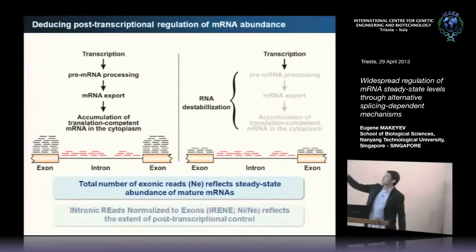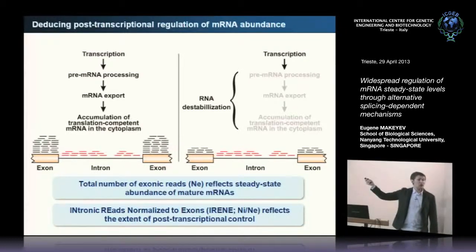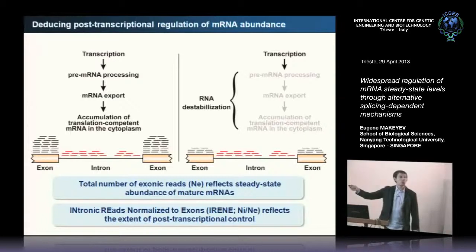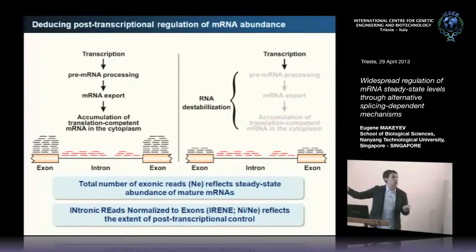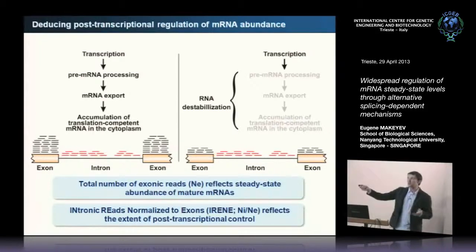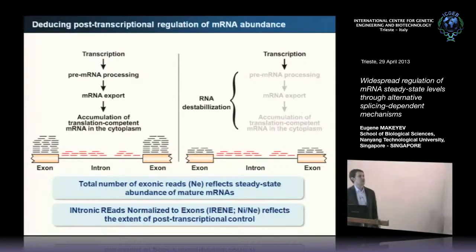If transcription goes normally, you would get the same number of intronic reads. But if something happens with the mRNA on the way to the cytoplasm, you would start losing exonic reads, because spliced RNA is the main contributor to exonic reads. Therefore, the ratio between intronic and exonic reads would change: if you normalize by dividing intron by exon, we call this statistic IRENE—for Intronic Reads Normalized to Exons. This also happens to be our bioinformatician's wife's name.